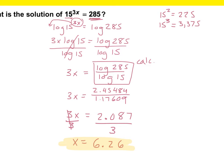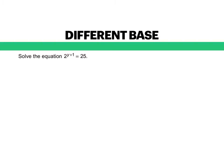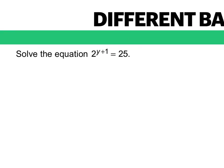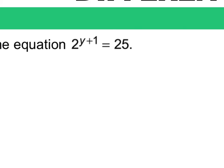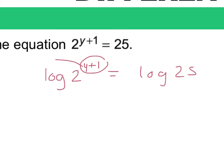We have one more example just like this one with different bases. Here we cannot get this 25 to have a base of 2. So what we need to do is take the log of both sides of our equation. So we have the log of 2 raised to the y plus 1 is equal to the log of 25. Now we're going to take our exponent and move it to the front, so we have y plus 1 times the log of 2 is equal to the log of 25.